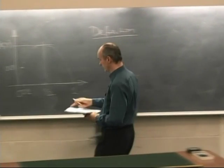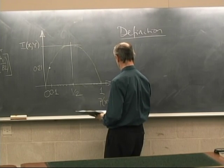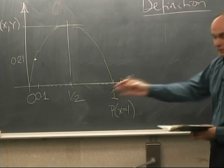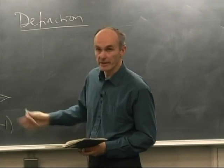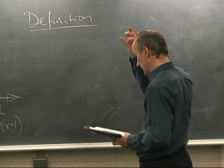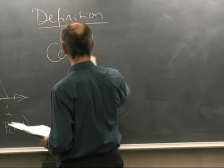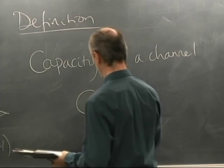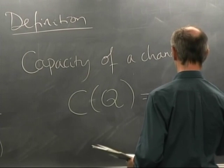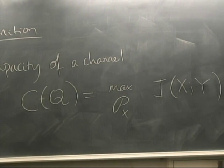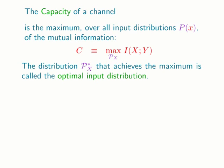We had a free choice of the input distribution. Something we could do is hunt around in the space of all possible input distributions for the one that maximizes the mutual information. That's the input distribution giving maximum mutual information between input and output. We define the result to be the capacity of the channel: C(Q) = max over all input distributions P(X) of the mutual information I(X;Y). The distribution that achieves this maximum is called the optimal input distribution.